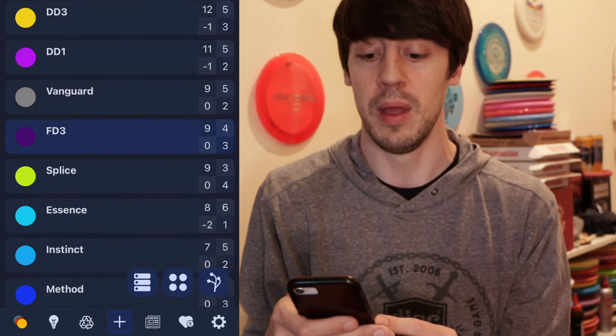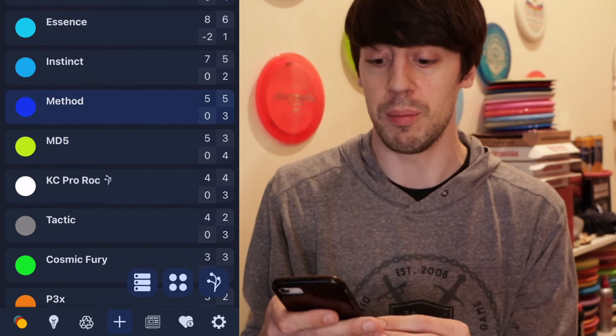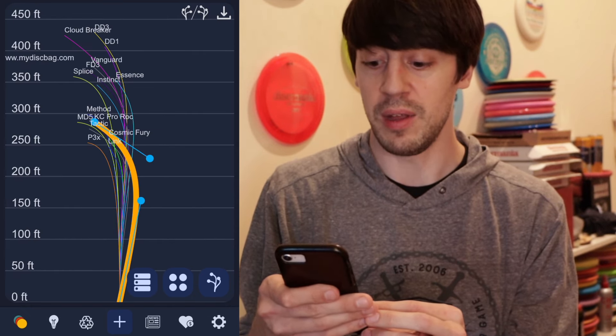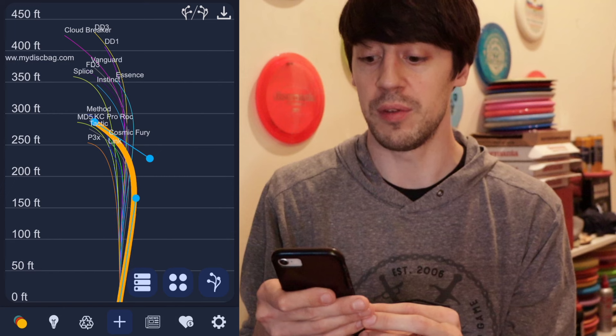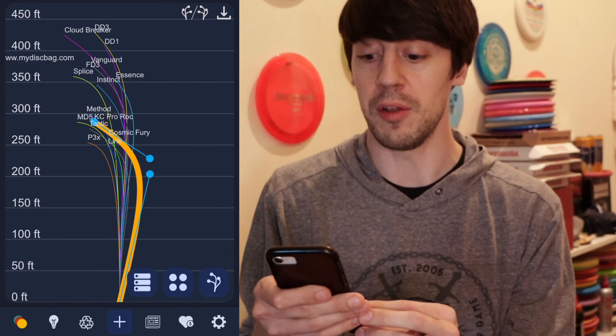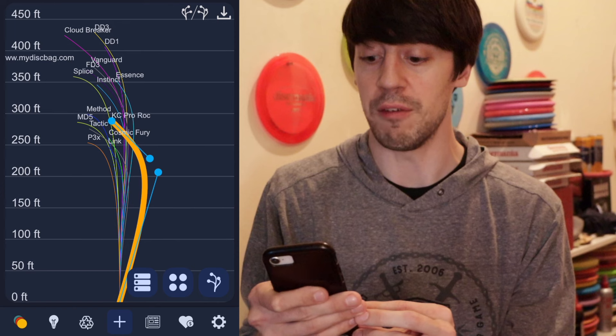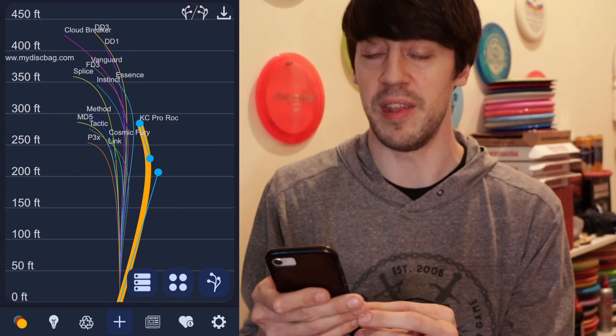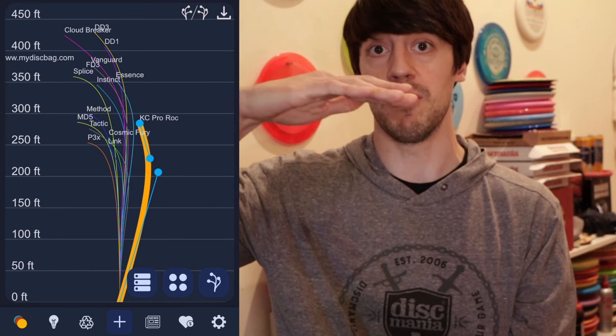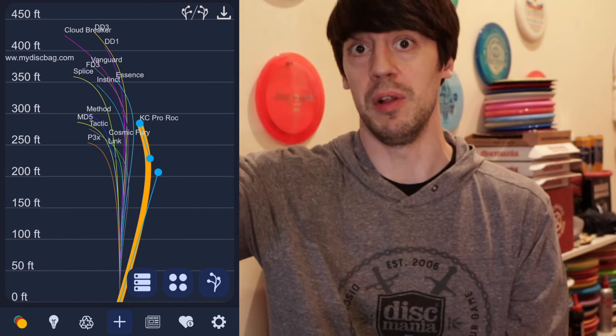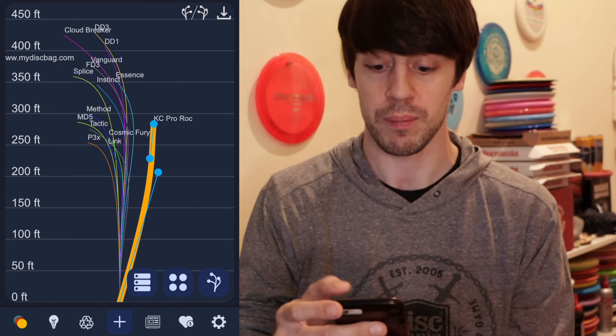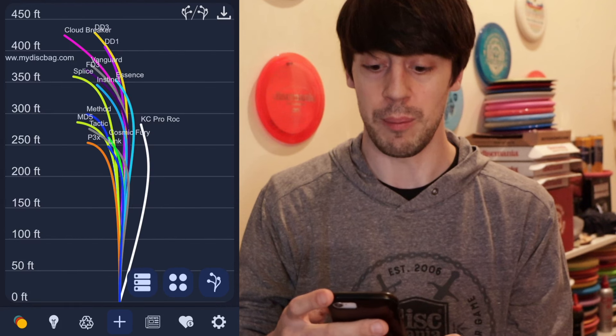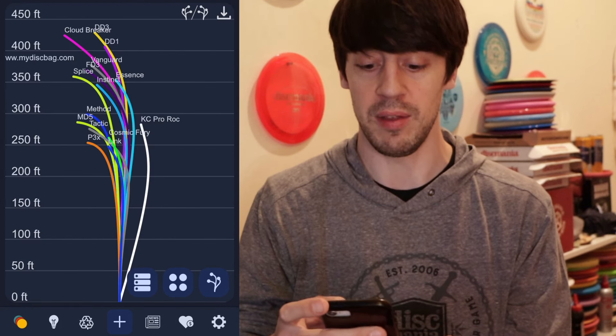Then you go back, you unselect it, and another example that I gave you was my KC Pro Rock. I'm going to select it, I'm going to go back. Now this one actually is pretty understable. So it actually gets a good amount of turn out of my hand and it's really not going to finish that much at all. If I throw it hard on a righty backhand, it flips up and glides and just barely comes back at the end.